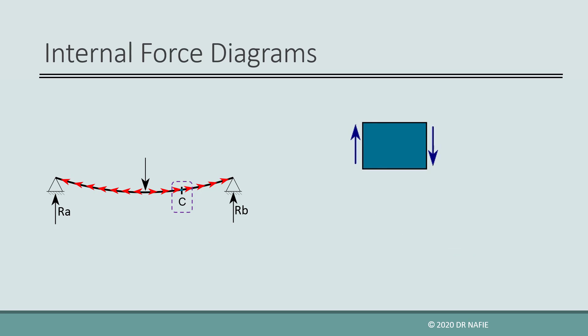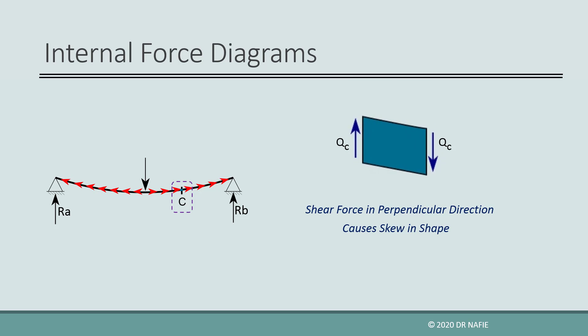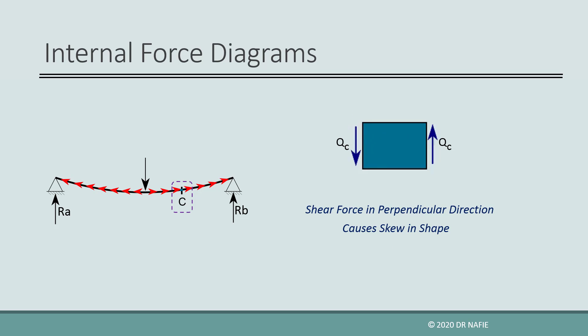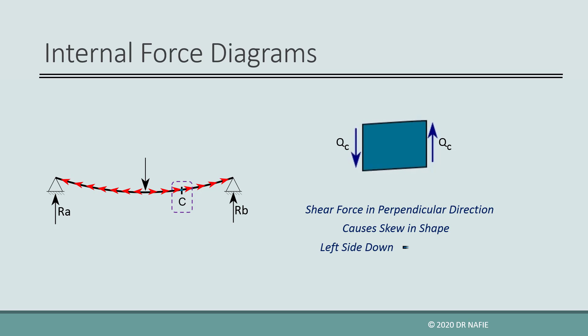Next, let us examine the second internal force, which is the vertical force. This force will affect the cut piece by skewing its shape. Therefore, it is called shear force and is represented by the letter Q. If the left side is going up and the right side is going down, then the shear force is considered positive. If the force is reversed, so that the left side is directed downwards and the right side is directed upwards, then the shear is negative.